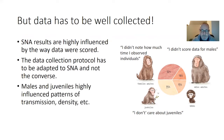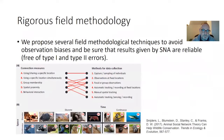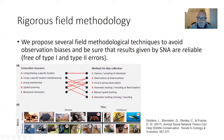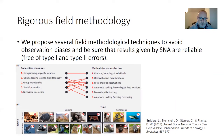For instance, males and juveniles highly influence the patterns of transmission density and so on. So here we propose several techniques to avoid observation biases and be sure that results given by the SNA are reliable, meaning free of type one or type two errors.